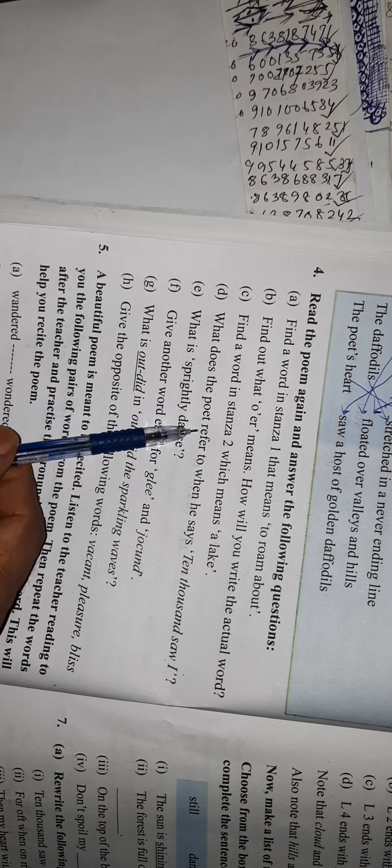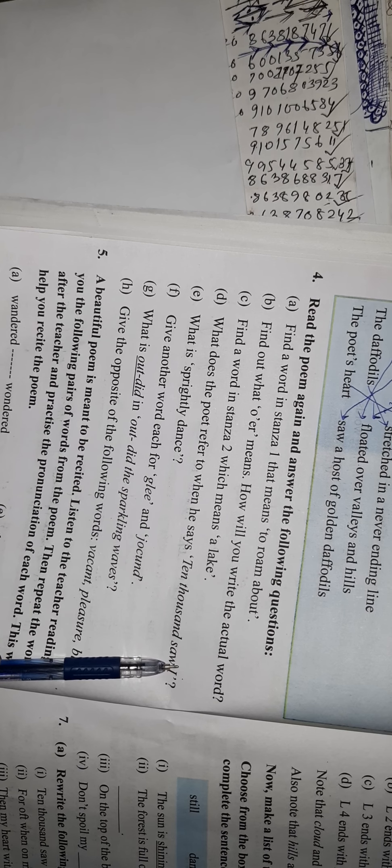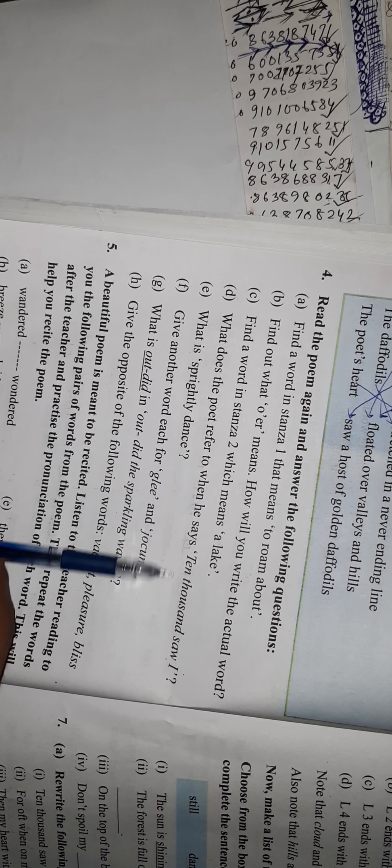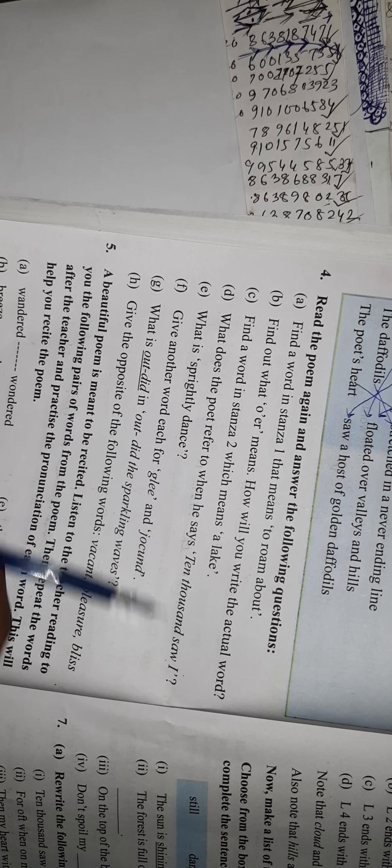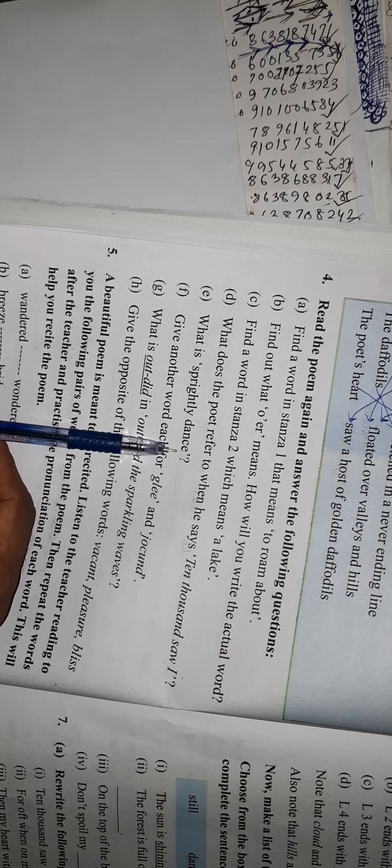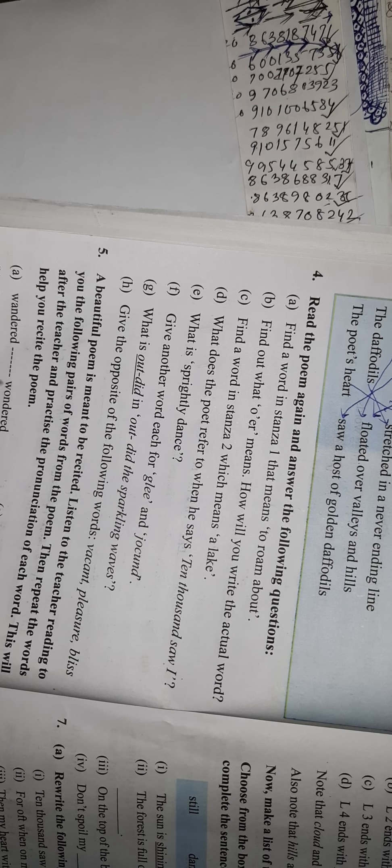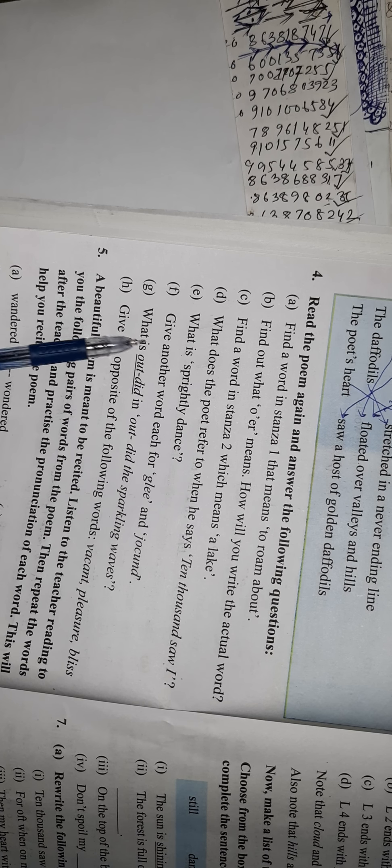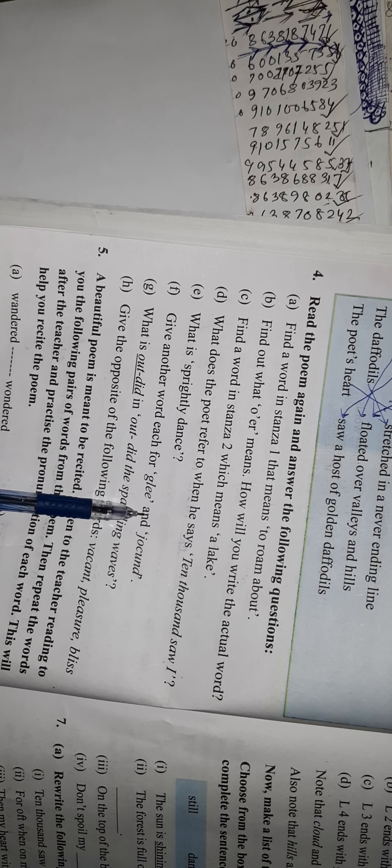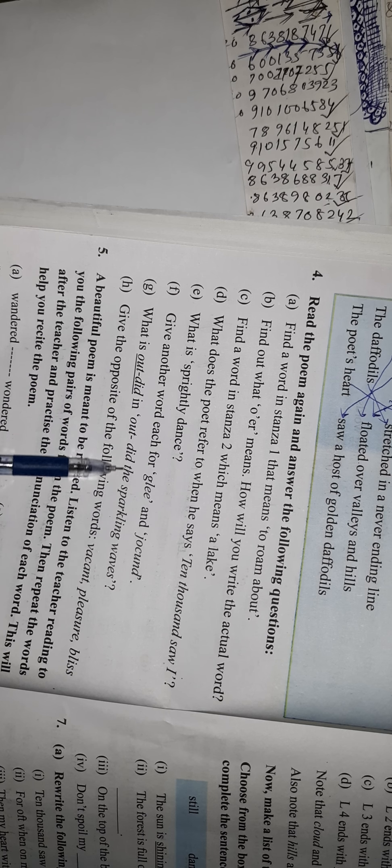What does the poet refer to when he says 10,000 I saw? The poet refers to the daffodils when he says 10,000 I saw. What is sprightly dance? Sprightly dance means dancing in a slow motion, very joyous way, very happily. Give another word for glee. Glee means happy.